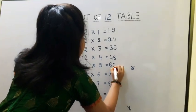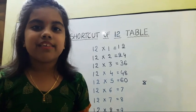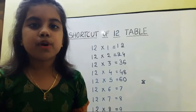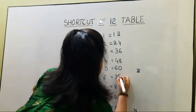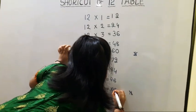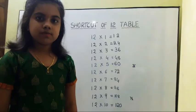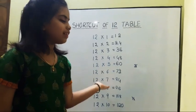And we should write 0. Again we should write 2 to 8 even numbers from top to bottom. And we should write 0. So this is the shortcut of 12 table.